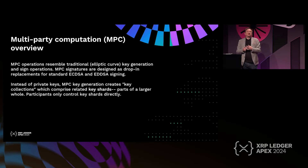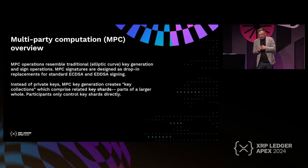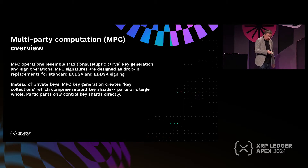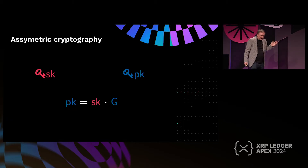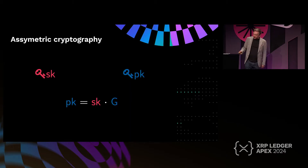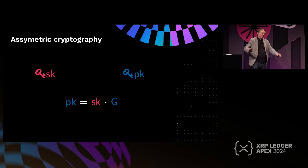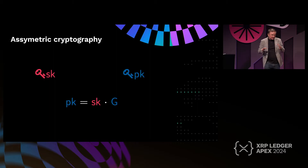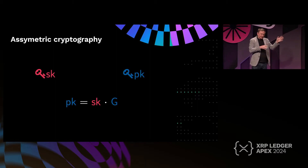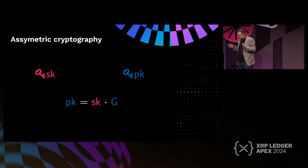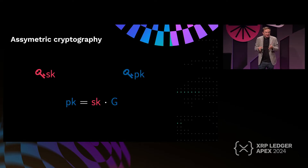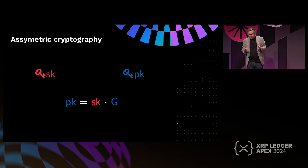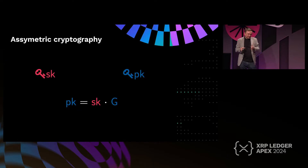There is a third property called non-repudiability, which means that whoever signed the transaction cannot deny it afterward. In asymmetric public key cryptography we always have two keys: a secret key and a public key. To produce a digital signature, the signer needs the secret key and the verifier needs the public key. The digital signature algorithm is designed to be signed only once and verified a thousand times publicly — there is no interactivity required between signer and verifier.